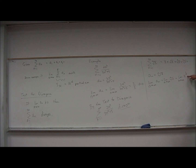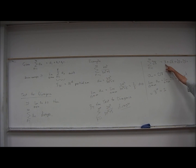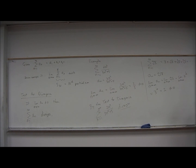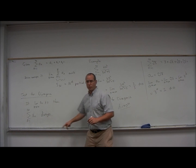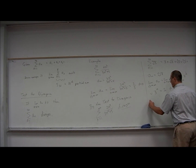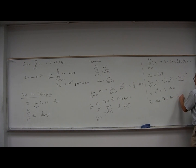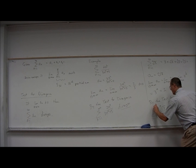As n goes to infinity, 1 over n goes to 0, so this is 3 to the power 0, which is 1. So these numbers are getting closer and closer to 1, and we're adding up infinitely many of them, so the series is going to diverge. The limit of the individual terms is 1, which is not equal to 0 — that's the condition we check in the test for divergence. If the limit of the individual terms is not 0, then the series diverges. By the test for divergence, the summation of the nth root of 3, n equals 1 to infinity, diverges.